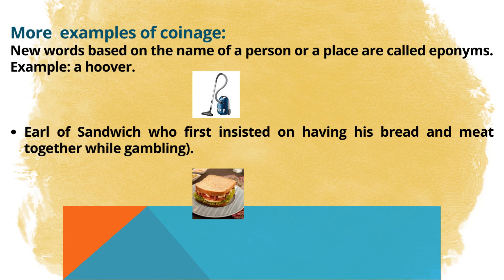More examples of coinage: new words based on the name of a person or a place are called eponyms. For example, a hoover, when actually it is a vacuum cleaner. Or Earl of Sandwich, who first insisted on having his bread and meat together while gambling.